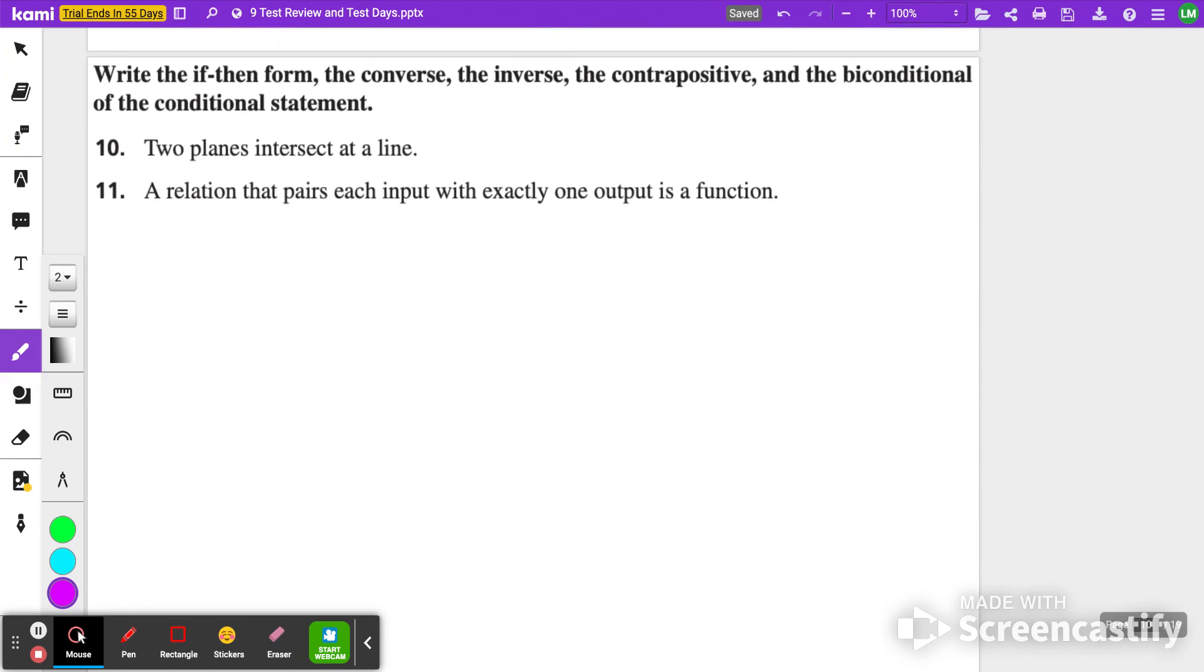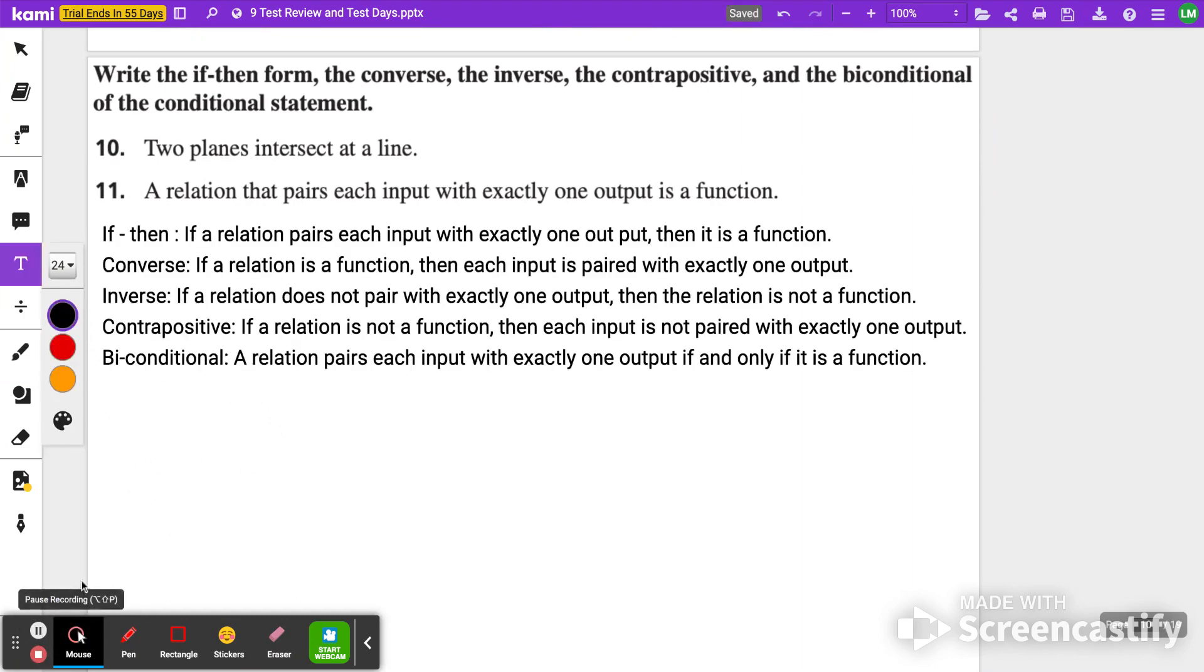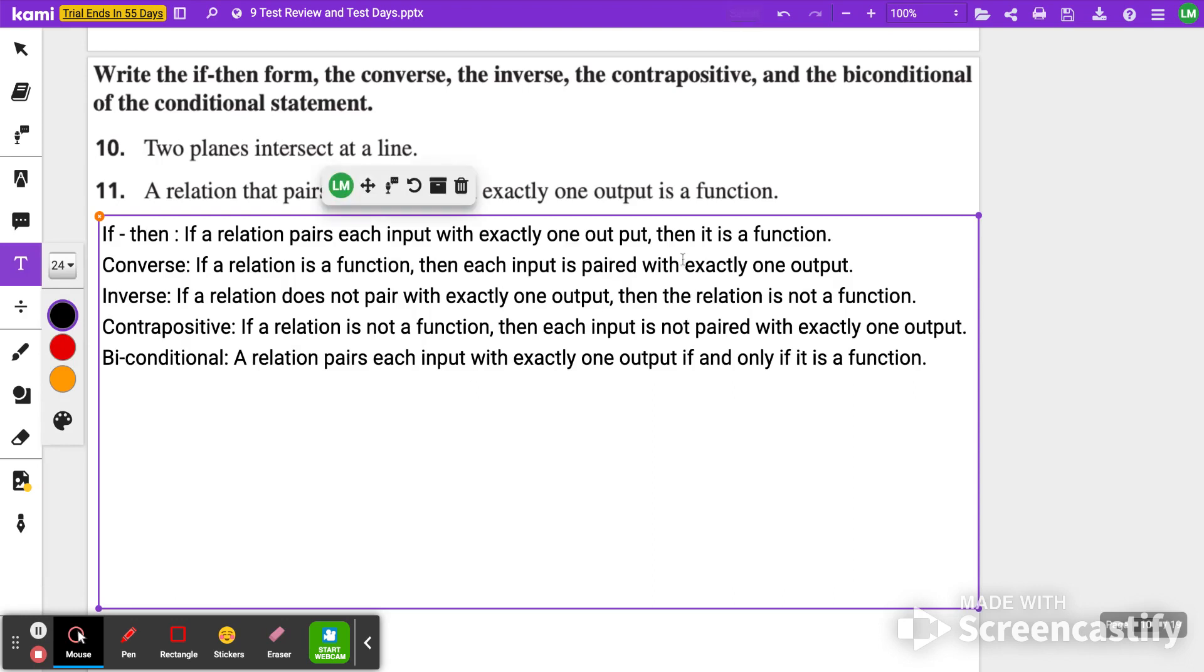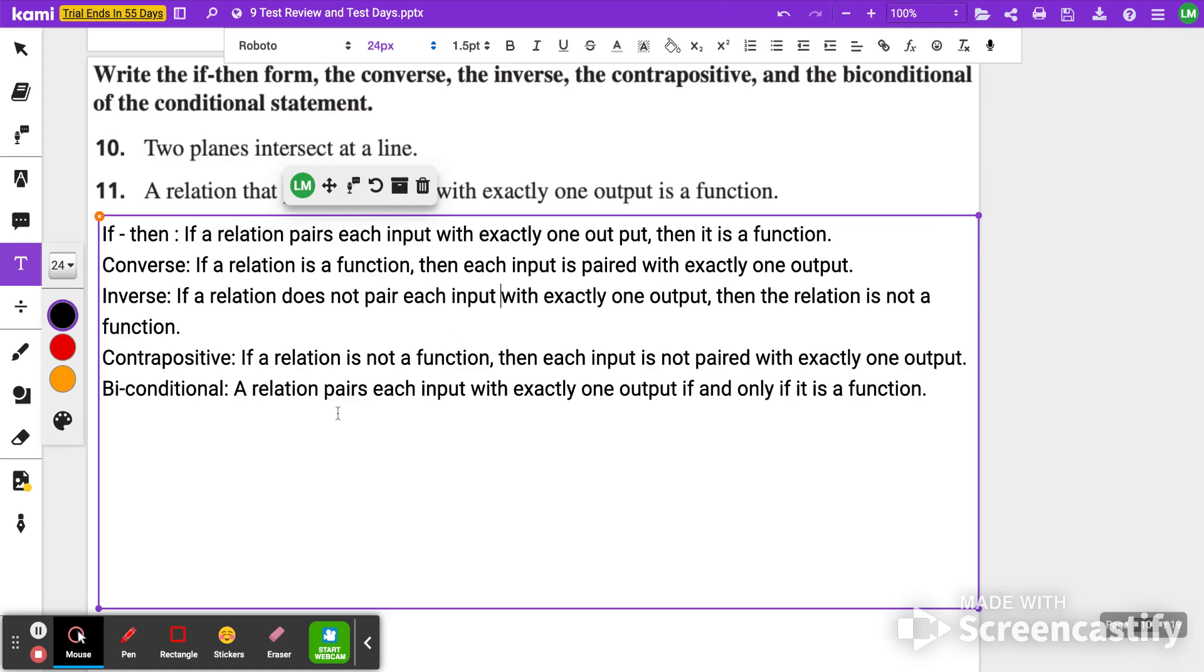For number 11, it says write the if-then form, the converse, inverse, the contrapositive, and the biconditional of the conditional statements. The if-then statement should state: if a relation pairs each input with exactly one output, then it is a function. Converse: if a relation is a function, then each input is paired with exactly one output. The inverse: if a relation does not pair each input with exactly one output, then the relation is not a function. The contrapositive: if a relation is not a function, then each input is not paired with exactly one output. Biconditional statement: a relation pairs each input with exactly one output if and only if it is a function.